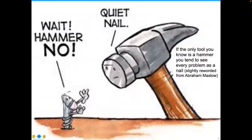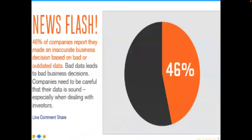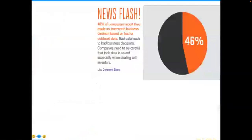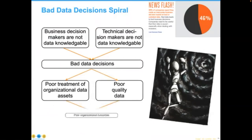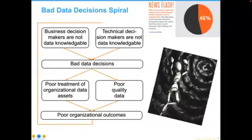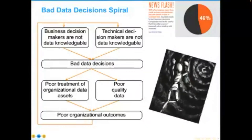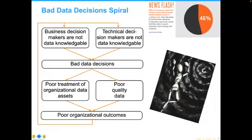Many companies indicate they have made bad decisions based on bad data — that's not surprising because business and technical decision makers are not data-knowledgeable. Collectively they make decisions that result in poor treatment of organizational data assets, poor quality, and bad organizational outcomes. We're in a lather-rinse-repeat cycle. The most typical example is implementing Salesforce.com and then deciding to clean the data in it — it should obviously occur the other way around.